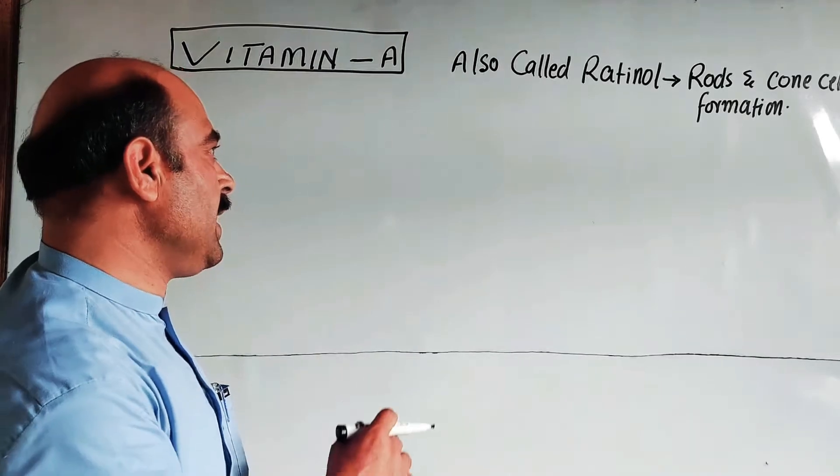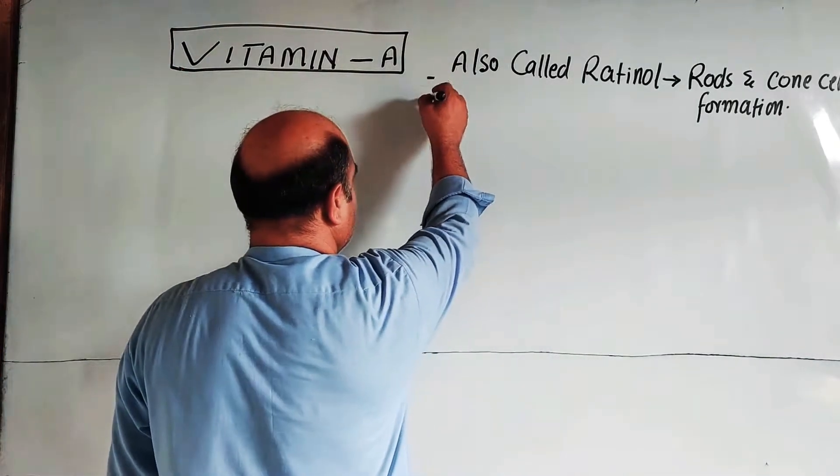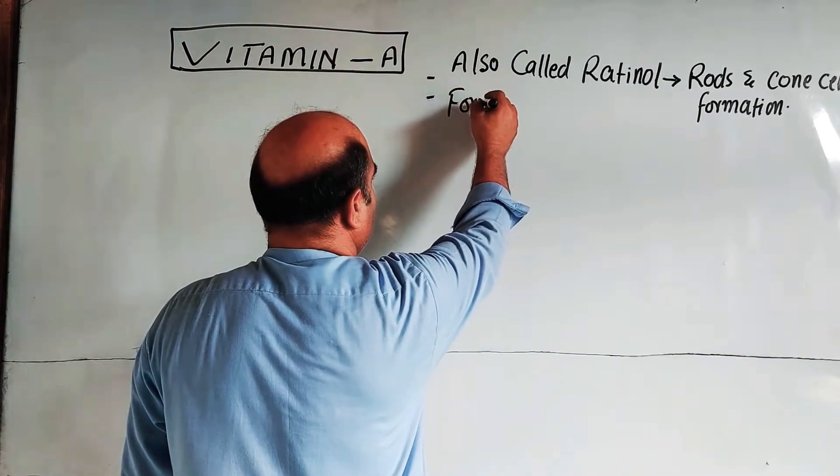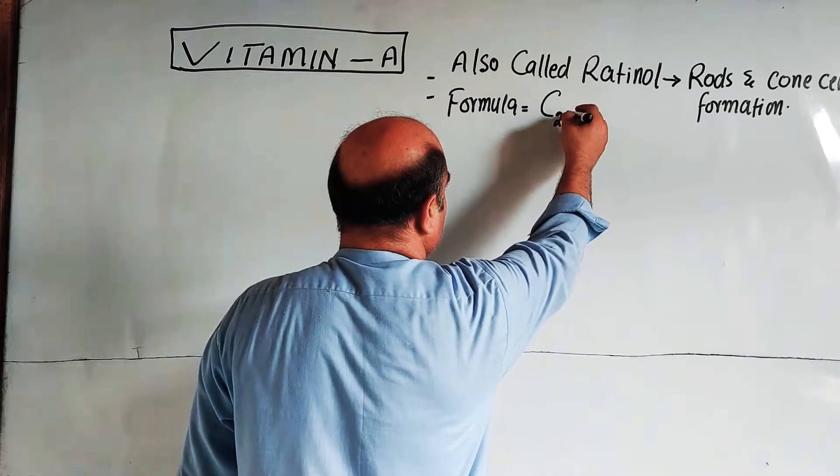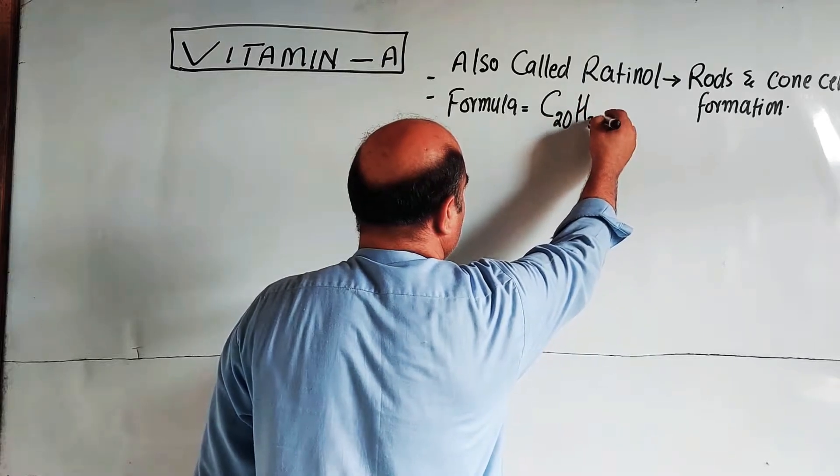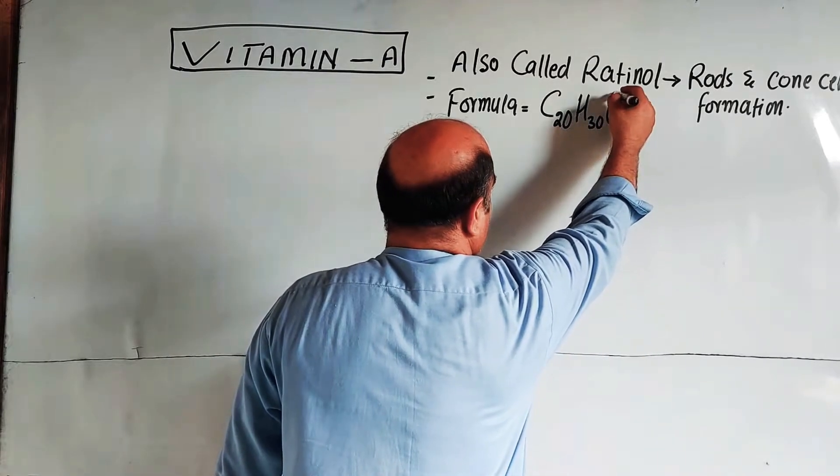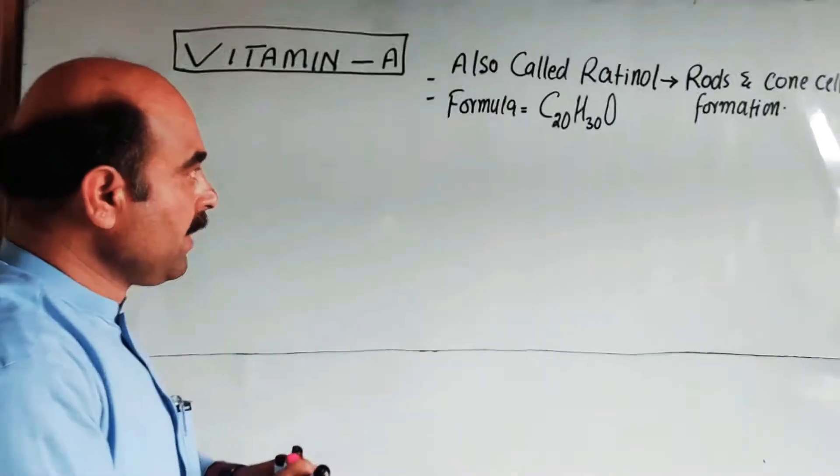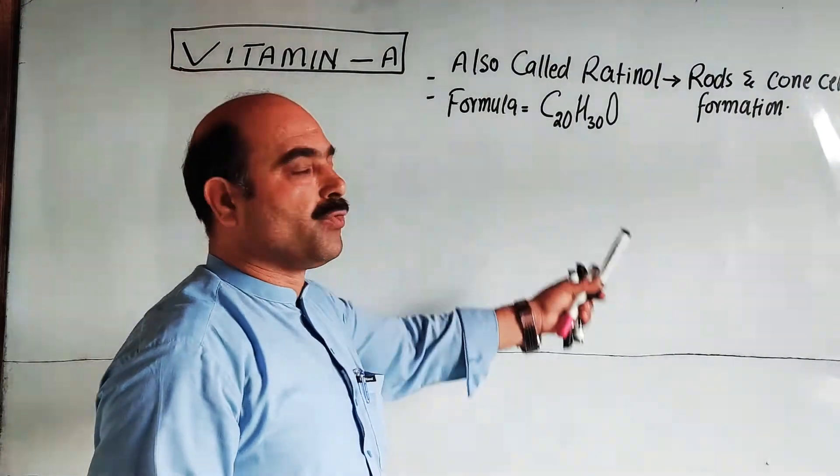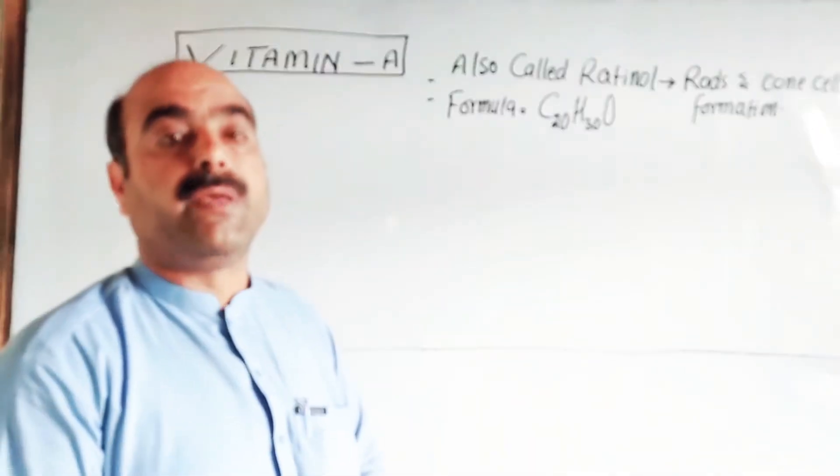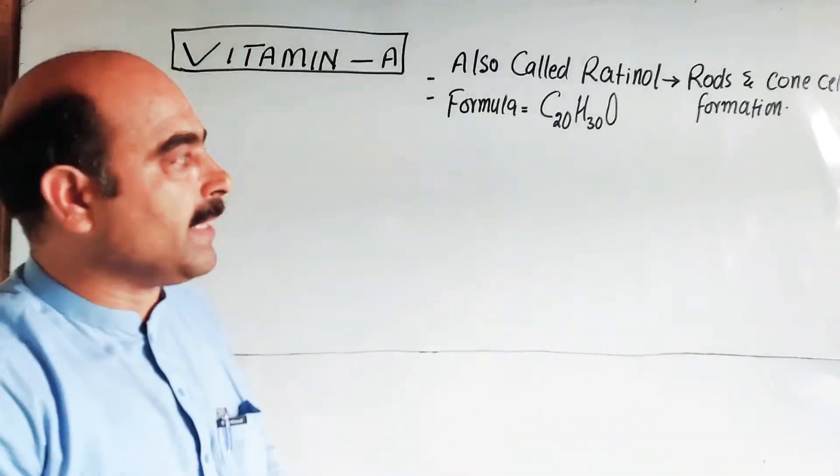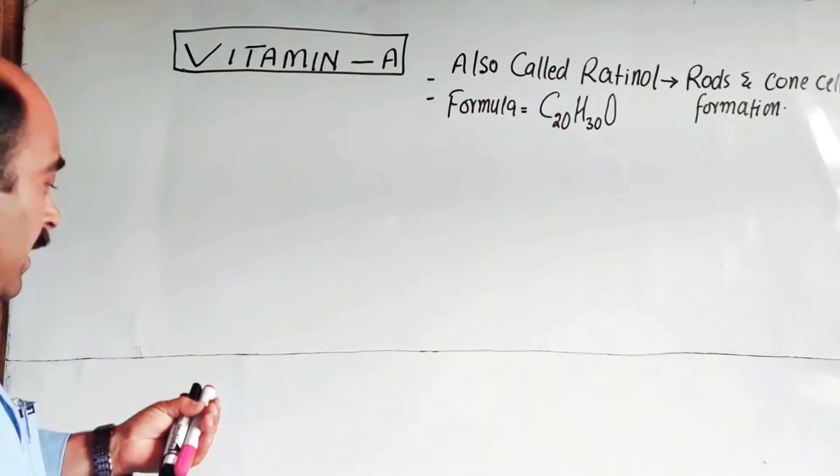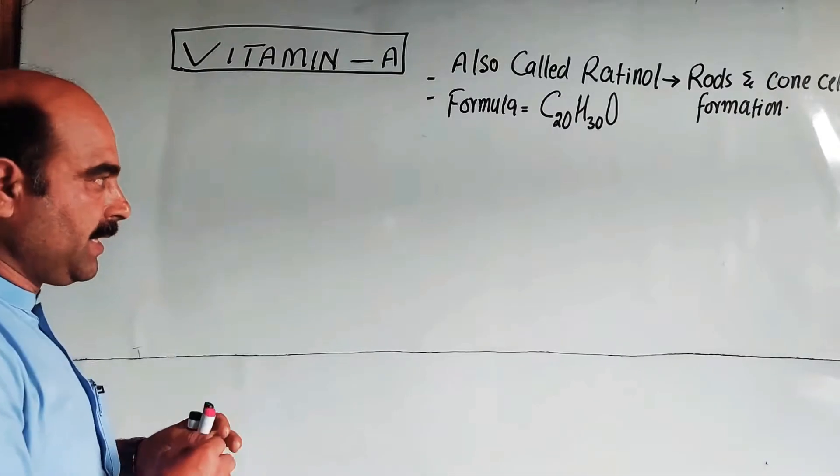The chemical formula of Vitamin A is C20H30OH. The chemical formula contains carbon and hydrogen, so Vitamin A is an organic compound.